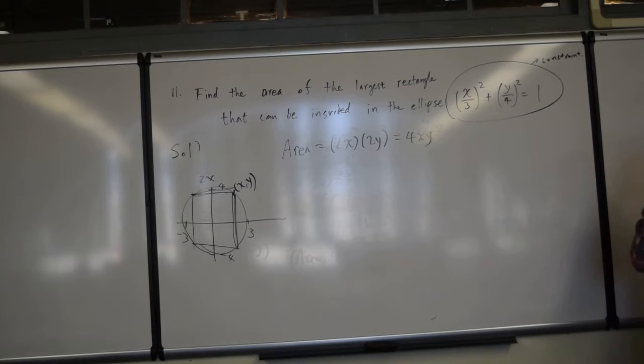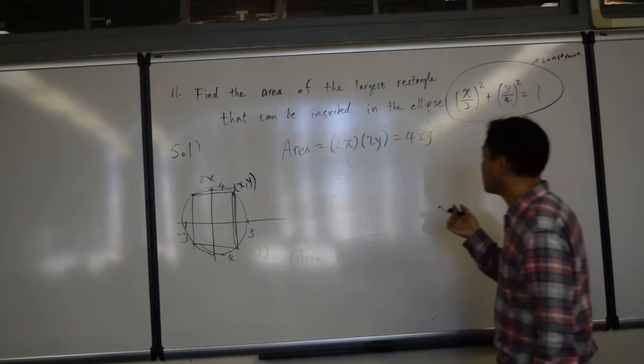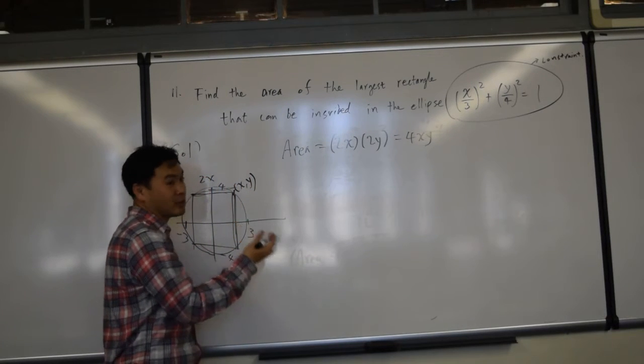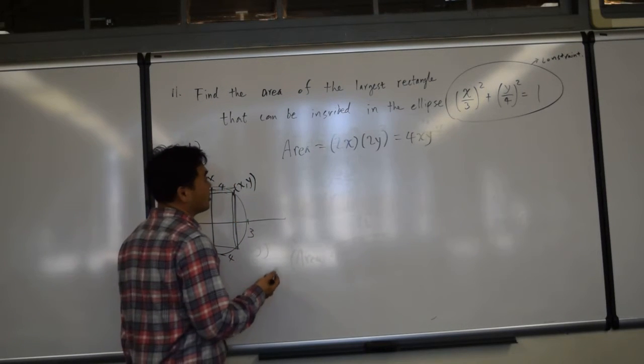So our goal is to maximize 4xy under this constraint. How do you solve any maximization question? You solve for y, or one of the variables, plug it back in, and differentiate, set it equal to 0.